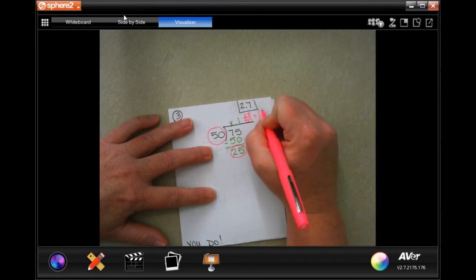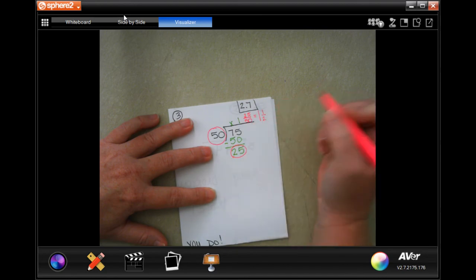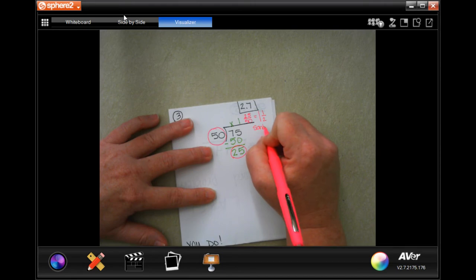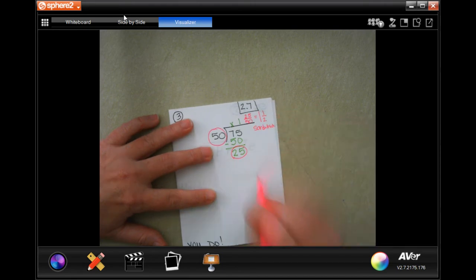So, 25 goes into 25 once. 2 quarters goes into 50 cents. So, 1 and a half sandwiches.